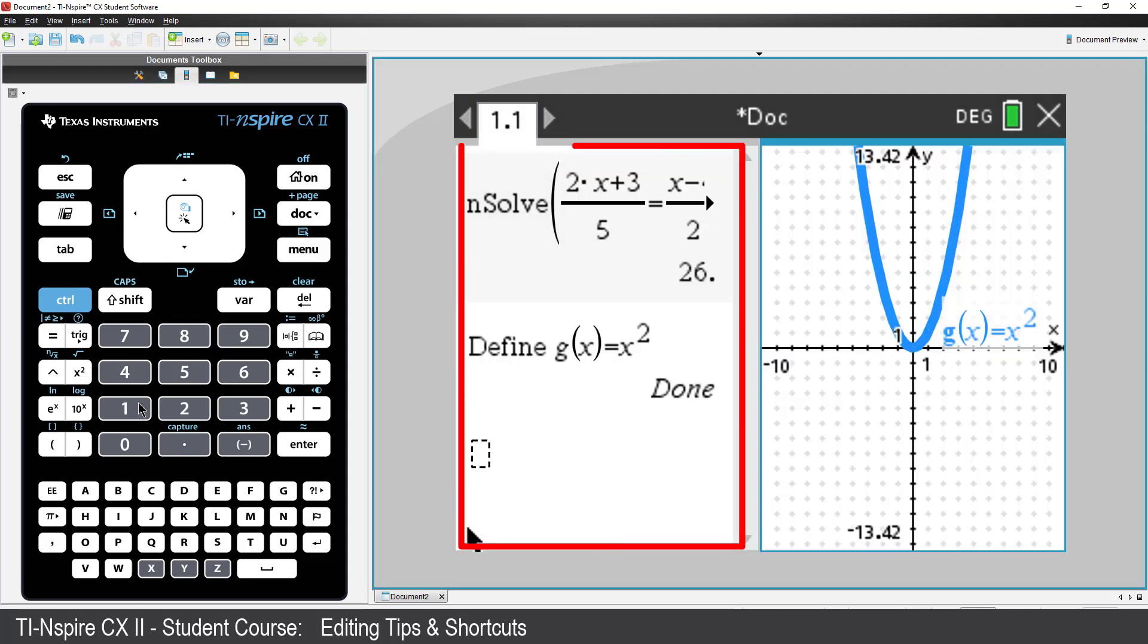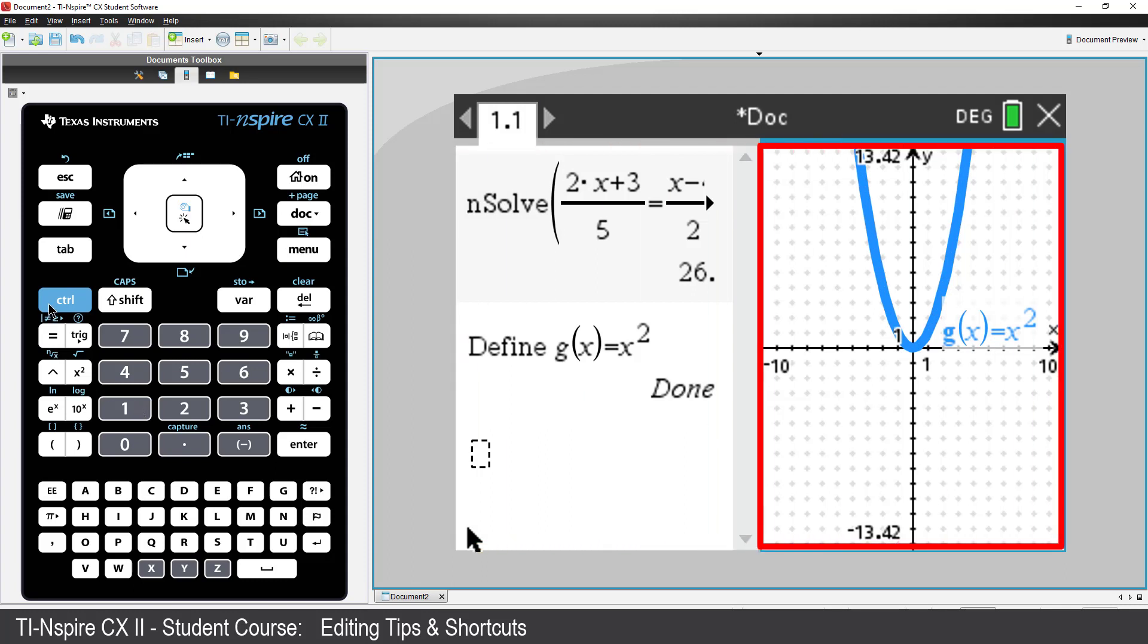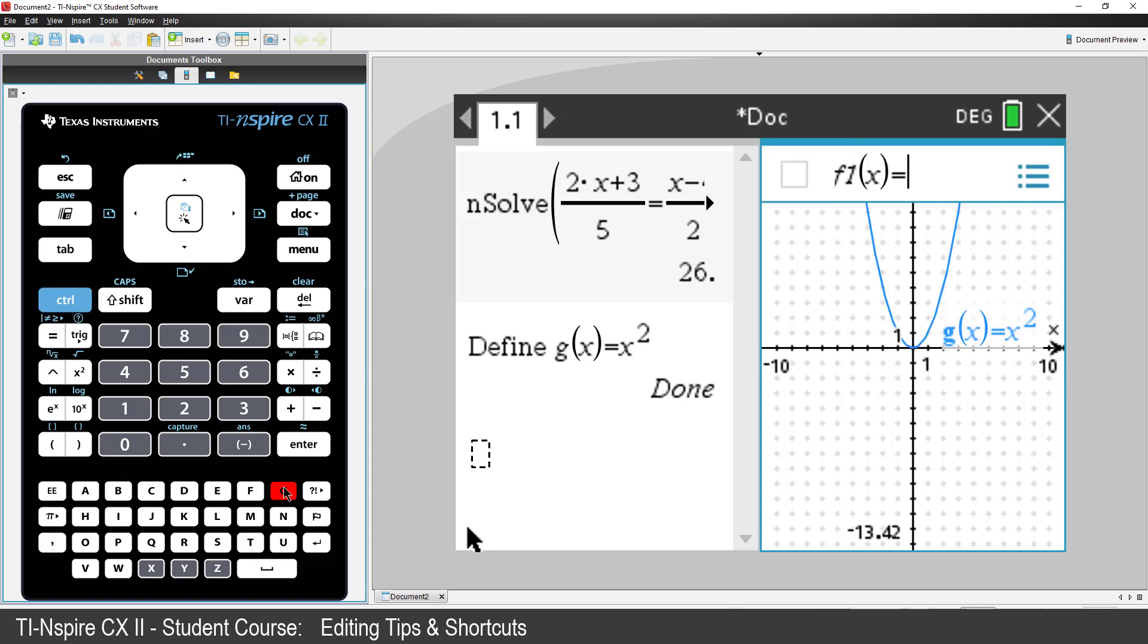On the left-hand side is my calculator application, and on the right is a Graphs application. You'll see a little blue border around the Graphs application, indicating this is the current active window. Press CTRL and G for Graph or Tab to reveal the equation entry line. I'll insert another graph: 5x minus 6. The two graphs appear to intersect.